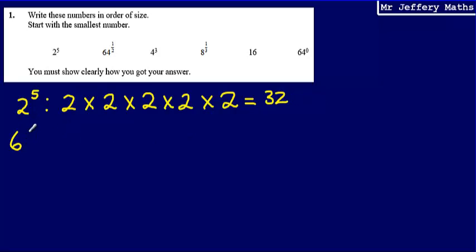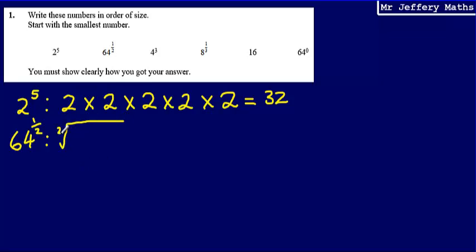Next, we've got 64 to the power of a half. When we have something to the power of a half, or a fractional power, the denominator of the power tells us what root we are going to take of the base. Because we have a denominator of 2, we are going to take the second root, or the square root. So we're going to take the square root of 64, and that is 8.